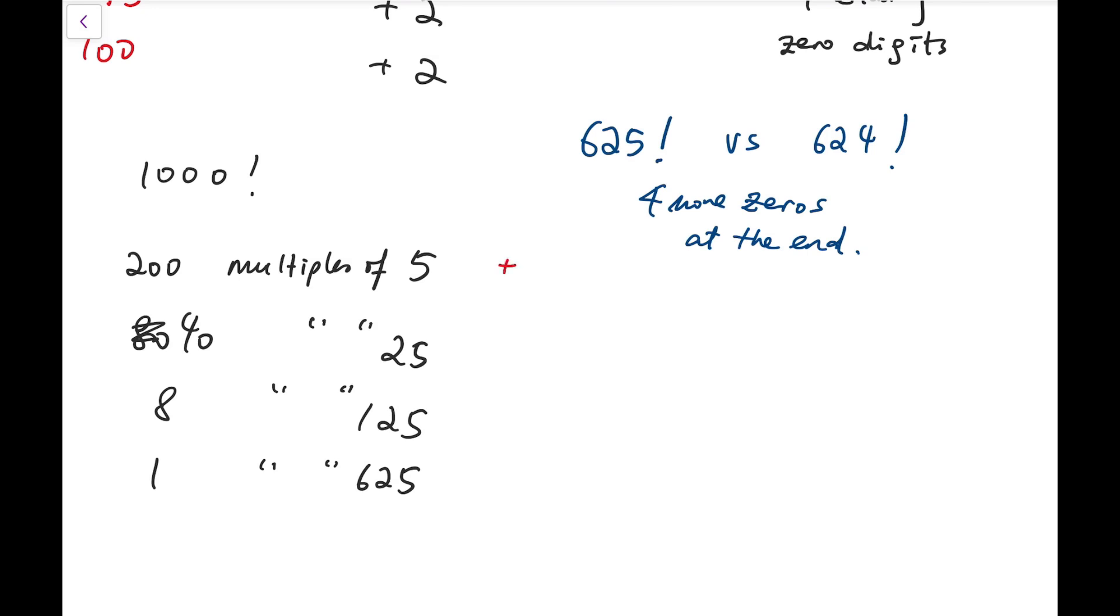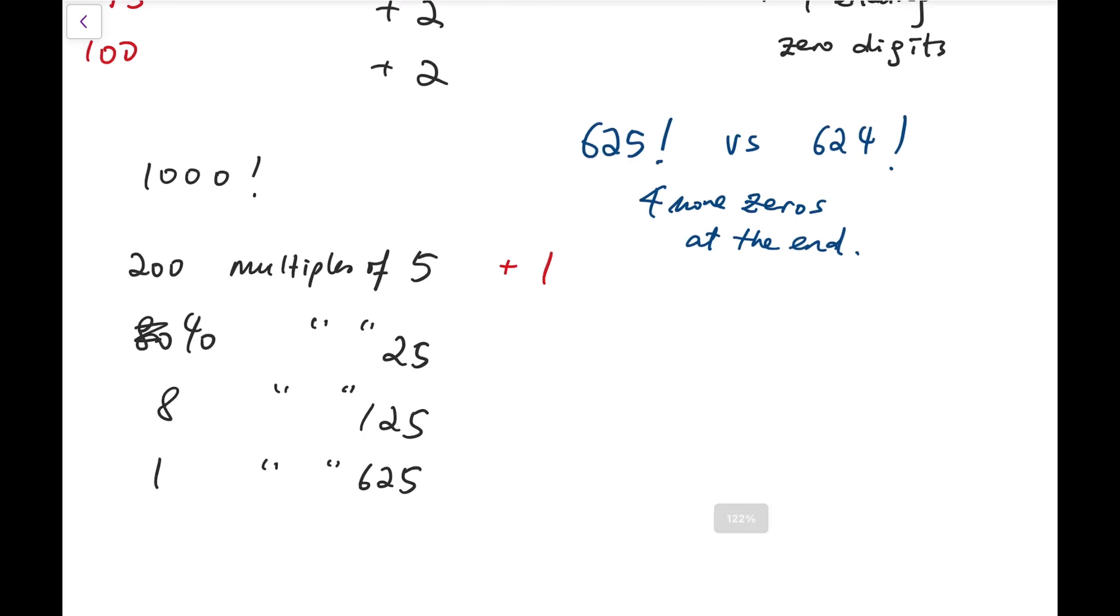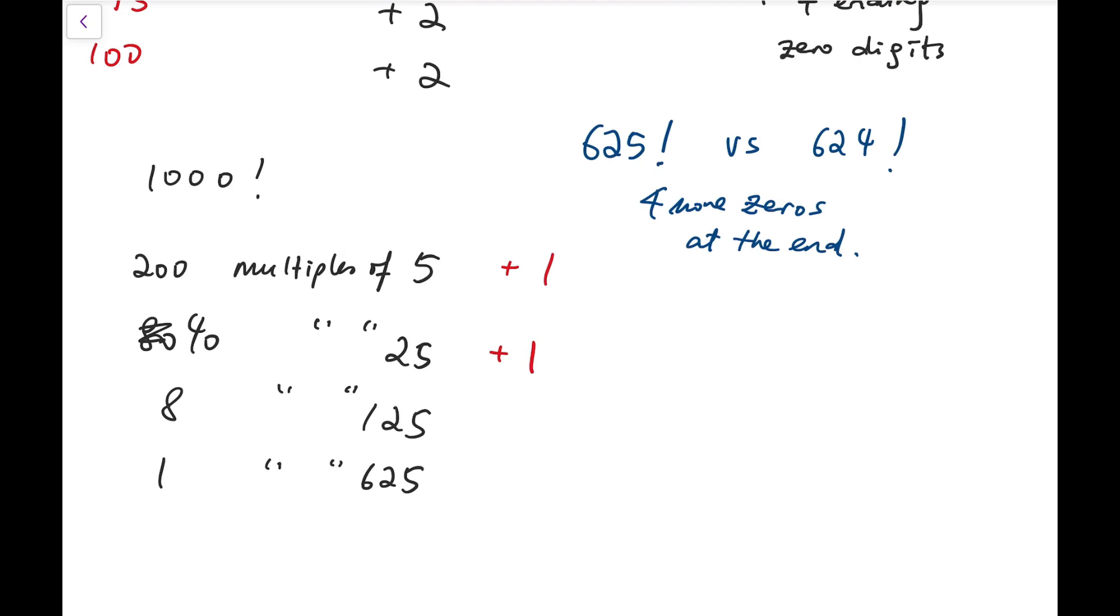So for the multiples of 5, one zero is added for each multiple. And then for each multiple of 25, because we have already added one zero digit while counting multiples of 5 already, and they each contribute two zeros and we have counted one of them already, so we just add 1 for each of them, one extra. So altogether, 1 plus 1 equals two zeros contributed by each multiple of 25.